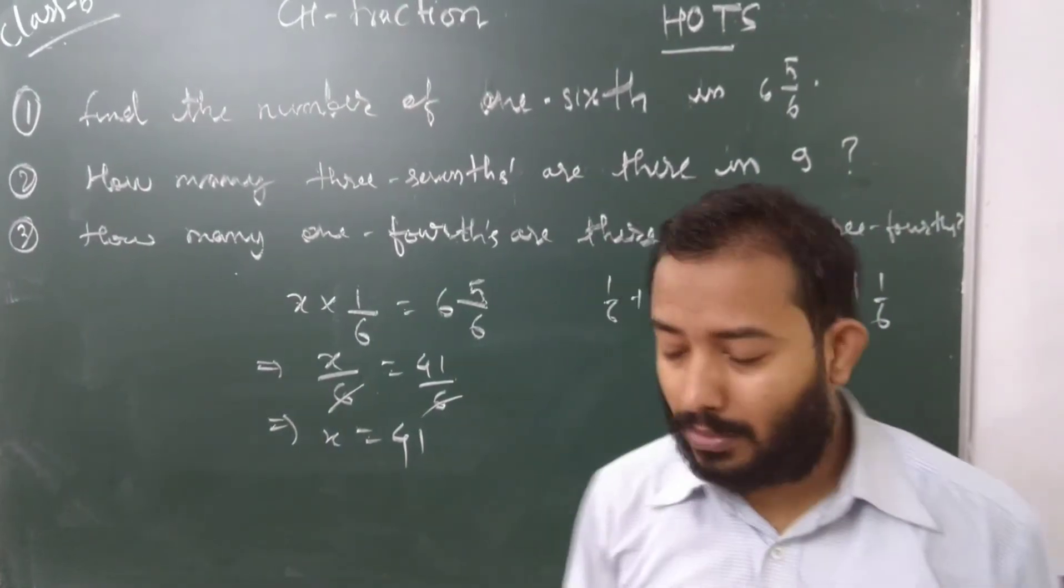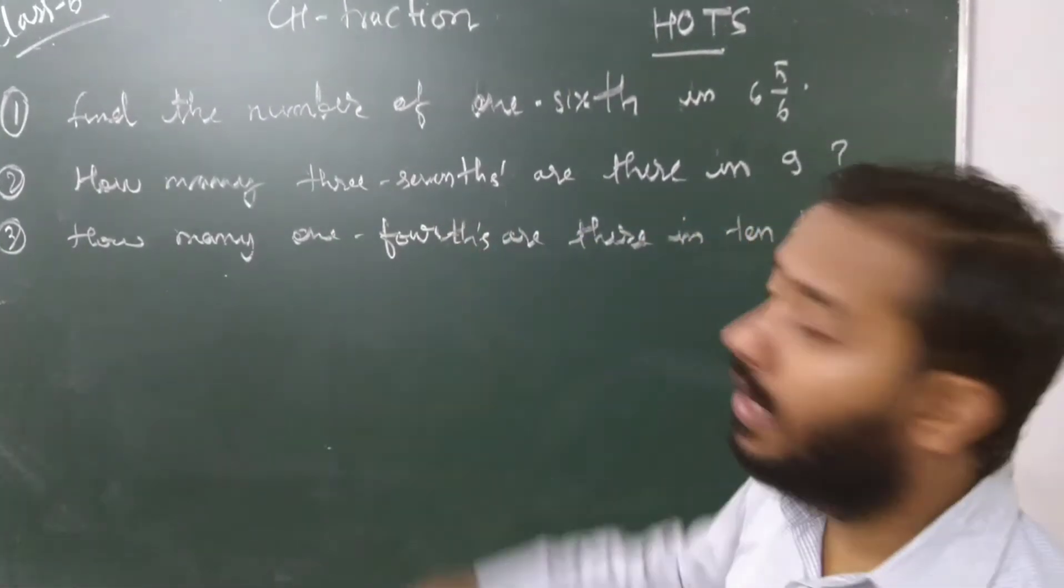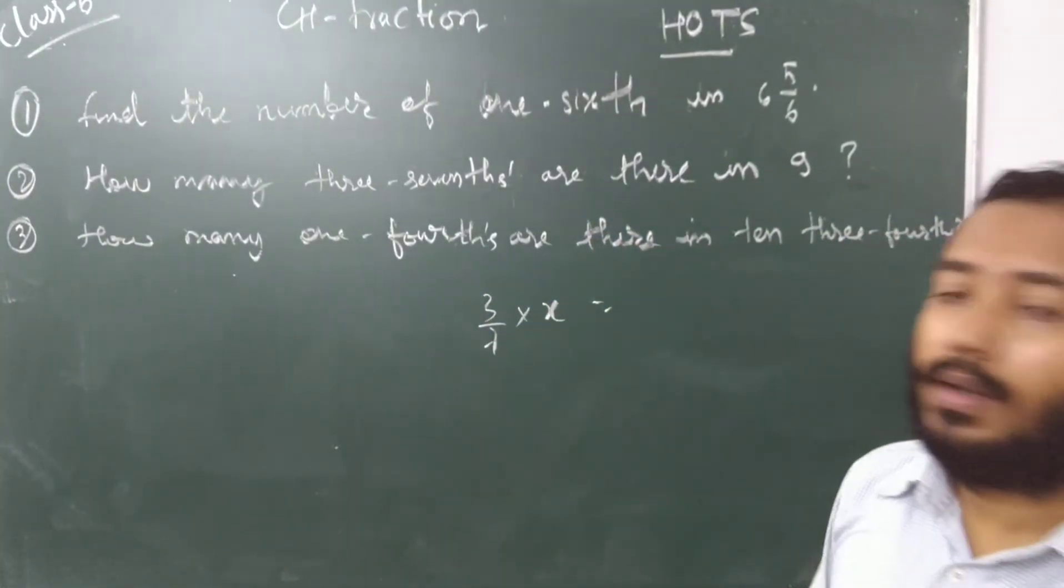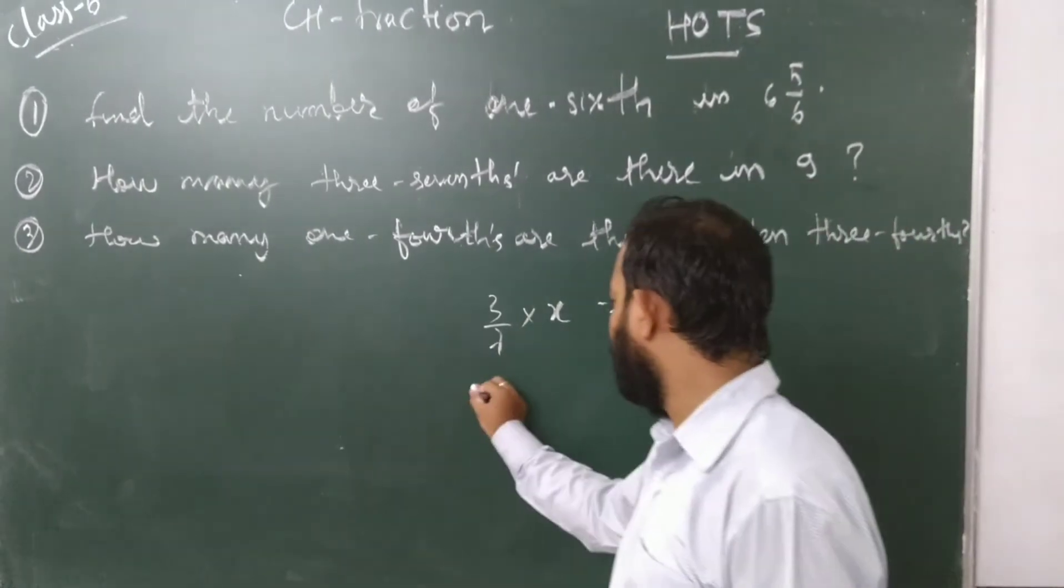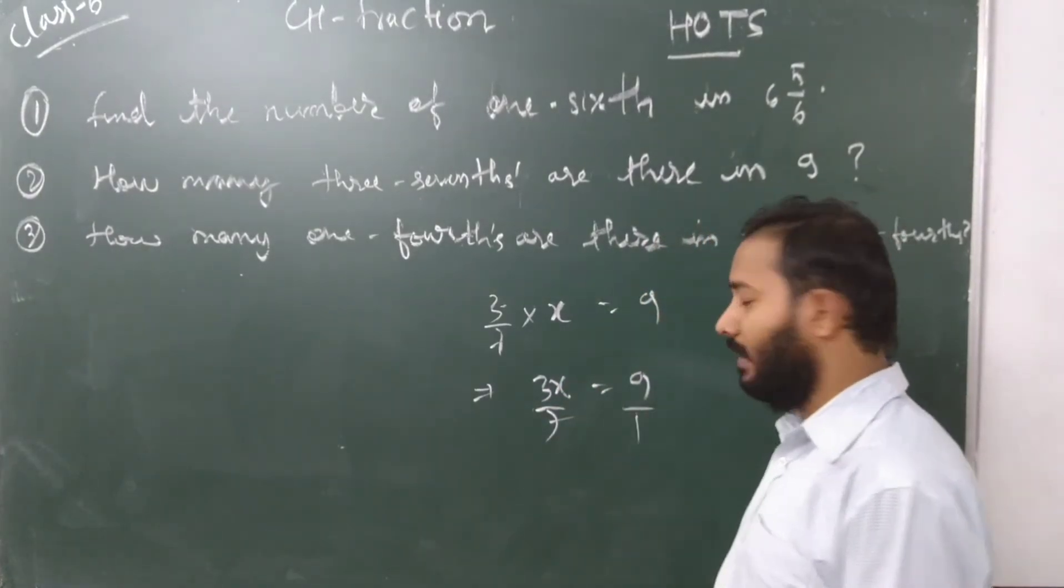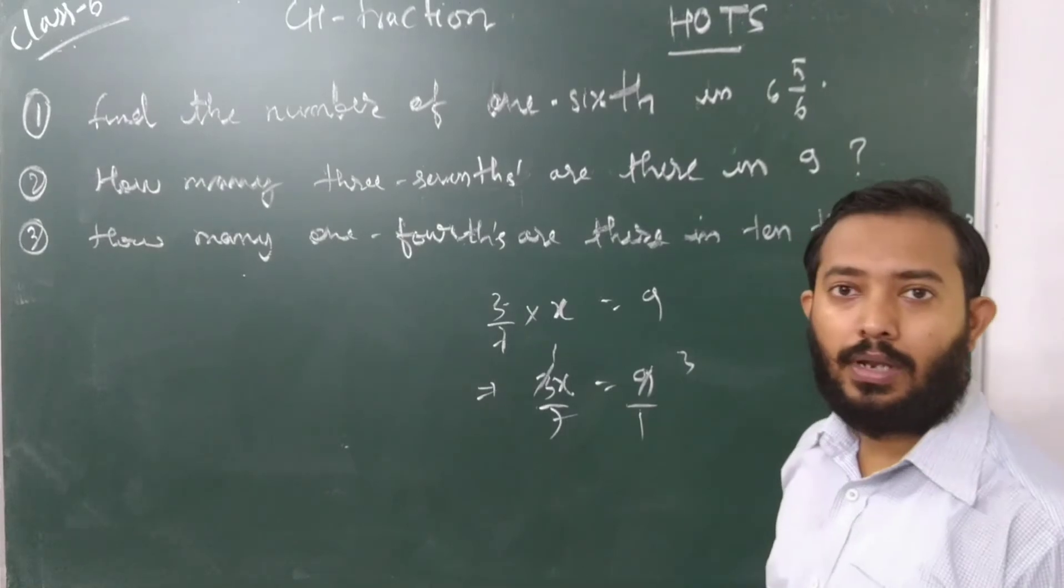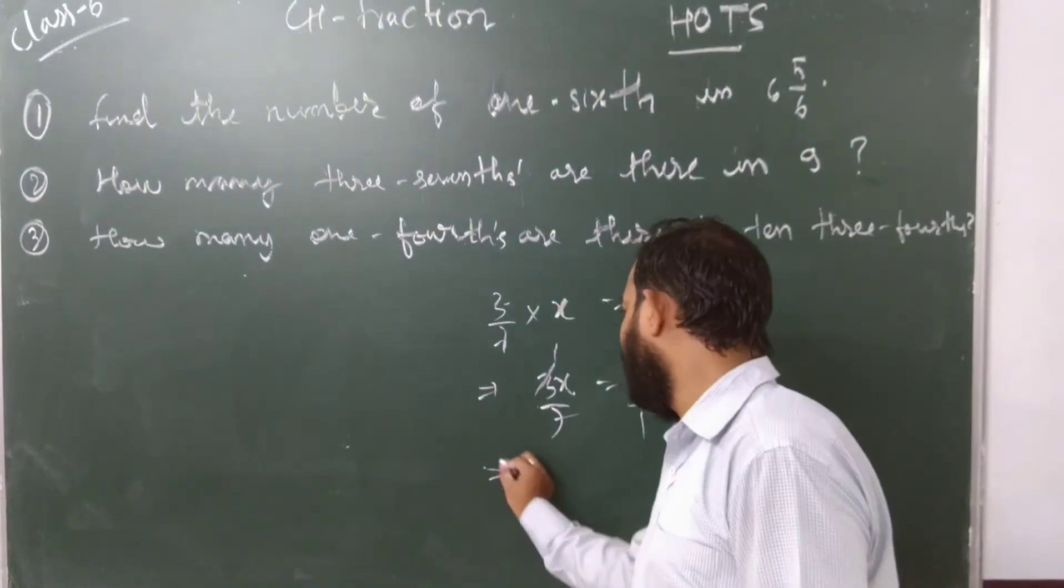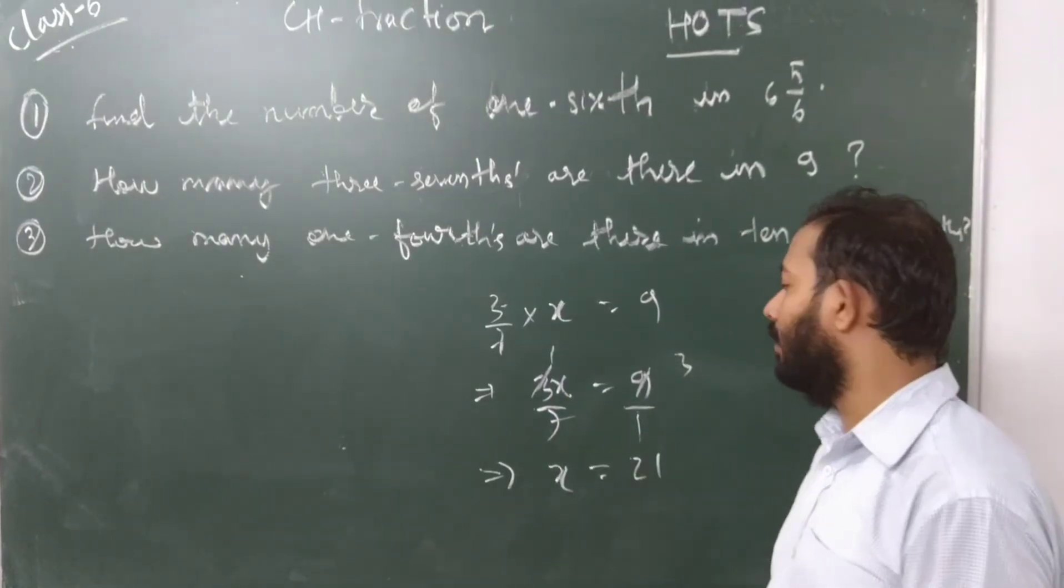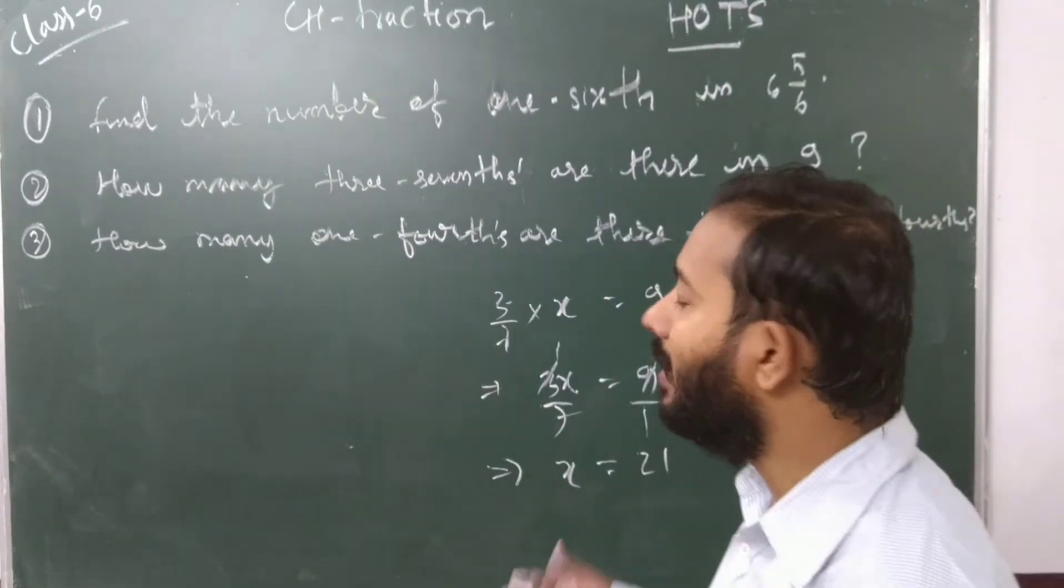Similarly, for the second one with three-sevenths: x times 3/7 equals 9. So 3x/7 equals 9/1. Cross multiply to get 3x equals 63, so x equals 21. That means 21 times you will write 3/7, and when you add them you will get 9.